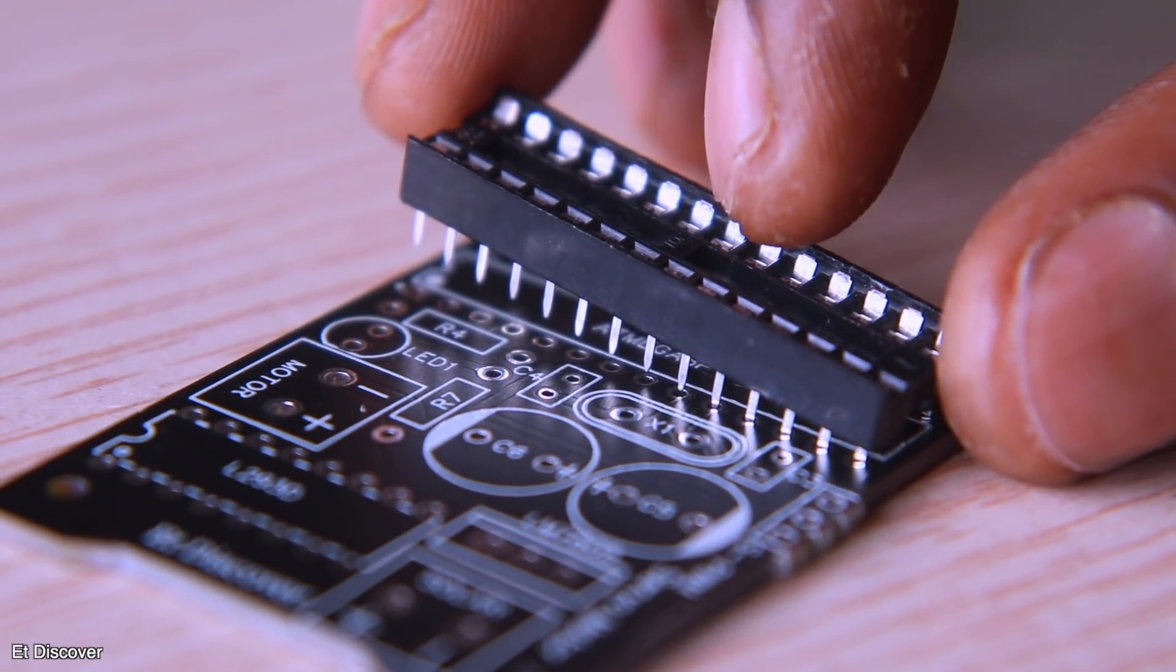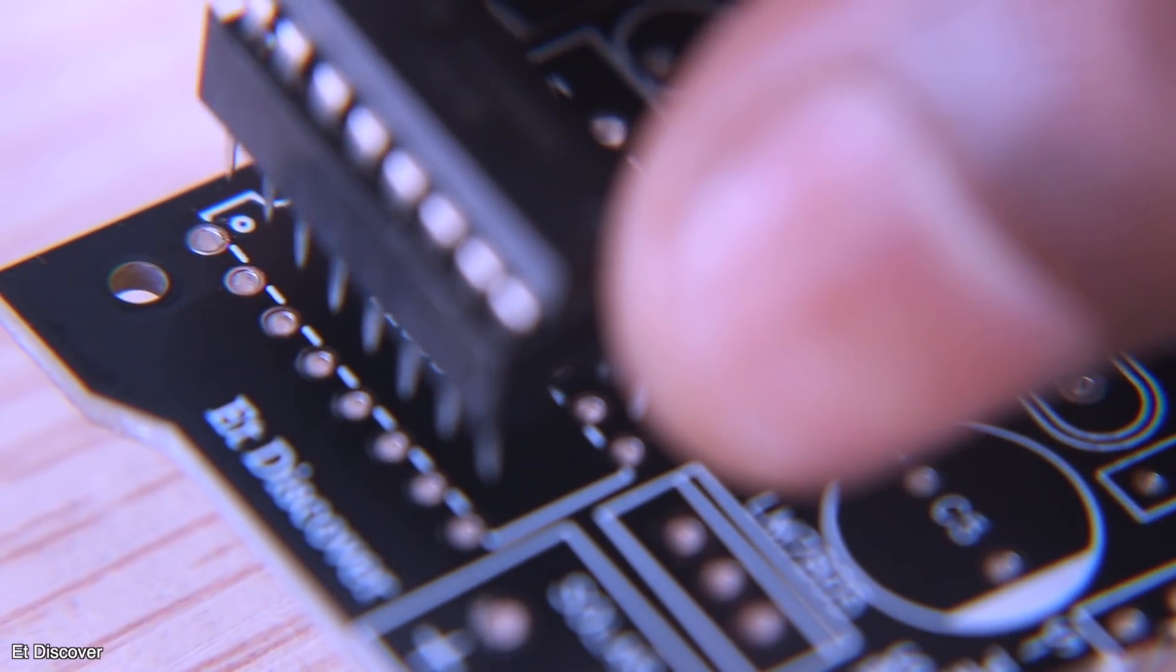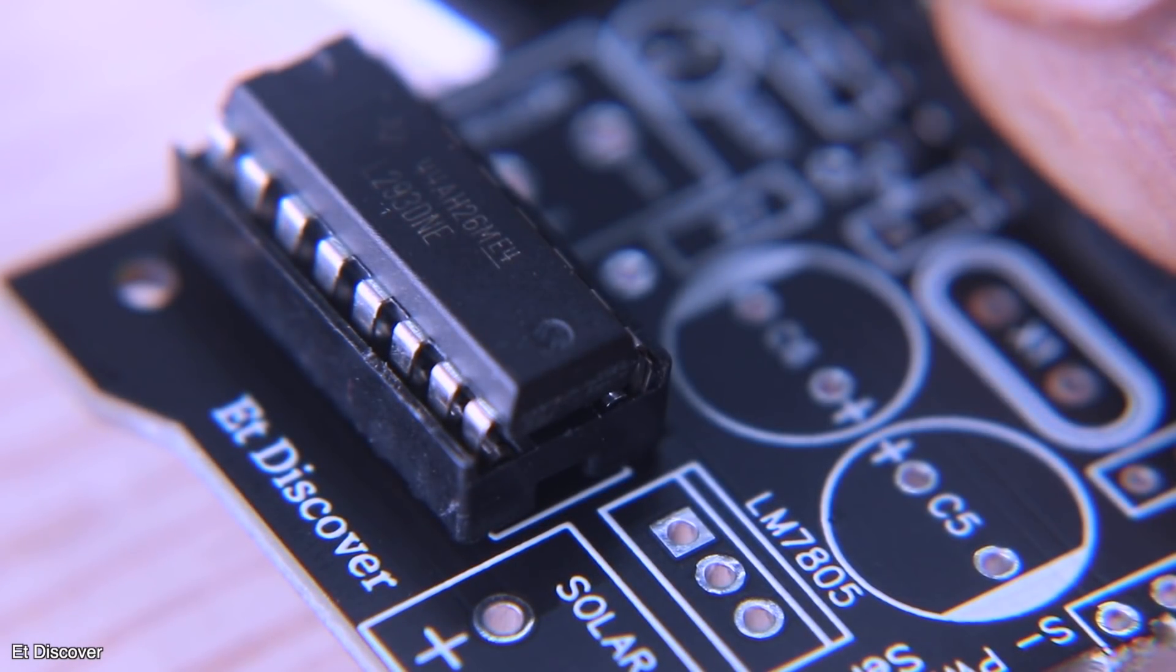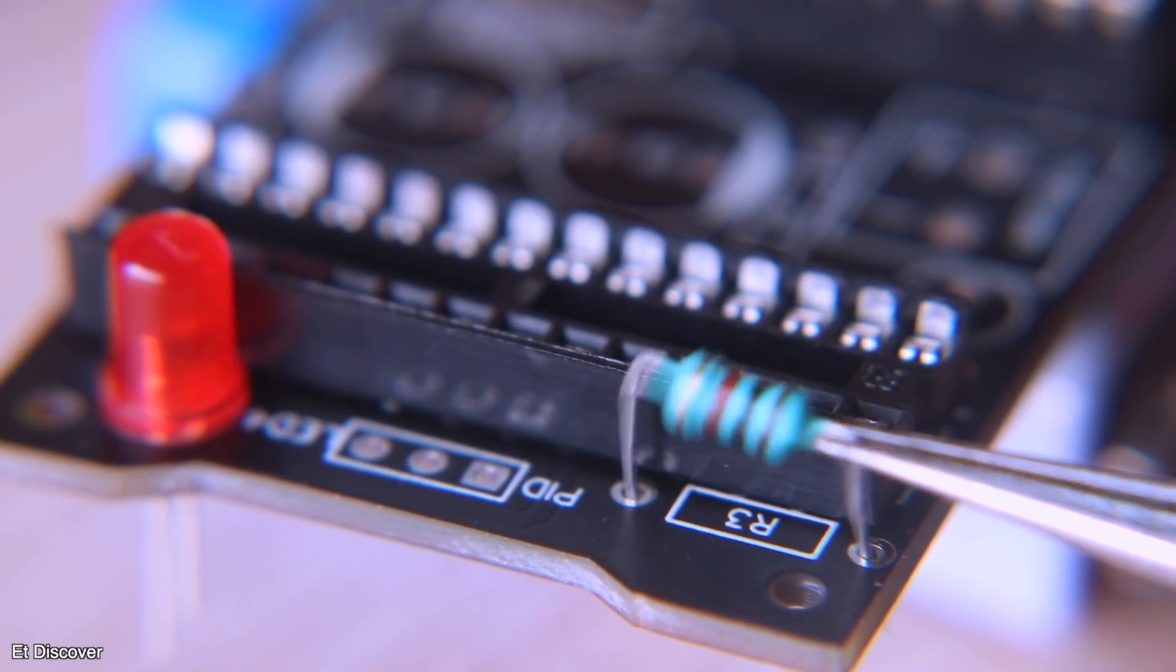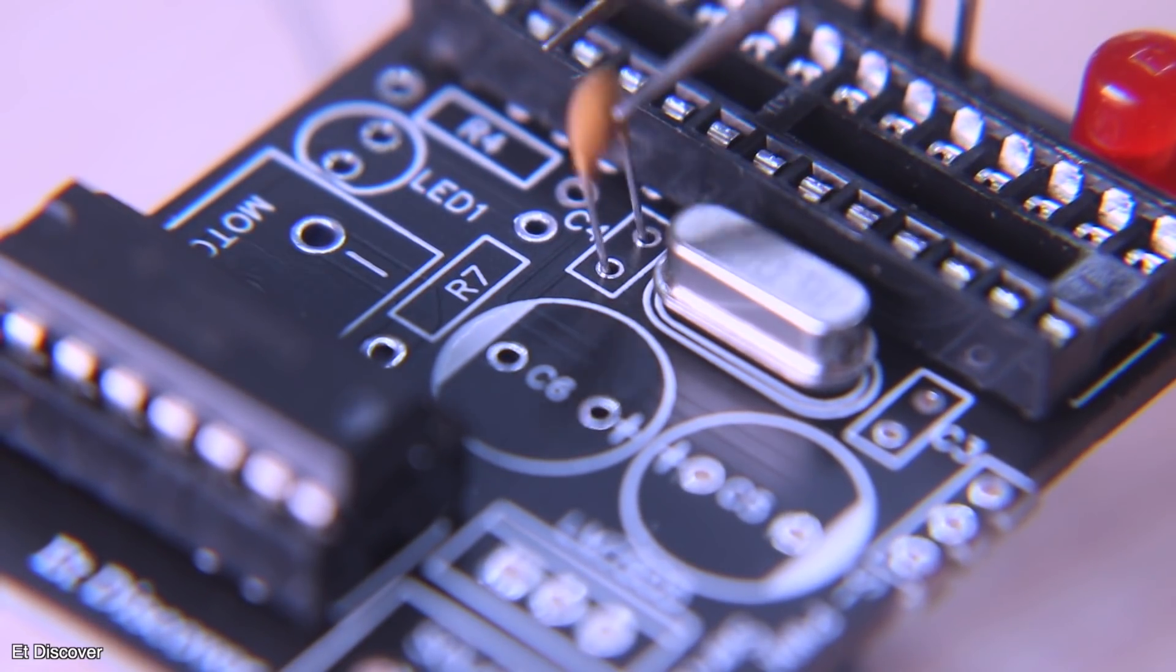You will find the Gerber file of the PCB in the description box as you always have. And if you want, you can also get the PDF layout in the description box. As a result, you can create PCBs in the etching method. It is really easy to make.